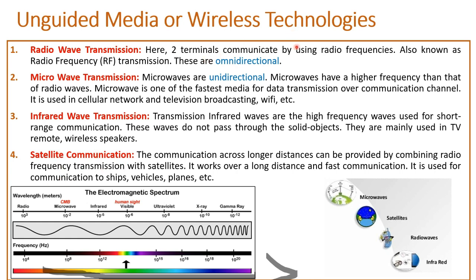The last type of wireless technology is satellite communication. We use satellites for wireless communication, and since satellites are used, they cover very long distances and communication happens very fast. This is basically used for communication in ships, vehicles, planes, etc.